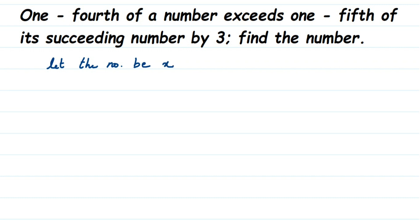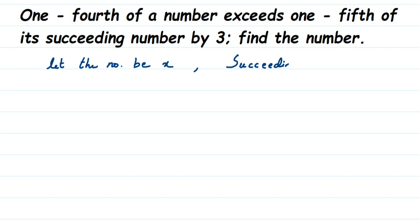Now let's read the question again. They have given that 1/4 of a number exceeds 1/5 of its succeeding number. The succeeding number is the next number - the successor of X, which will be X plus 1. If 5 is a number, its successor will be 6, which is 5 plus 1. So if the number is X, the succeeding number will be X plus 1.